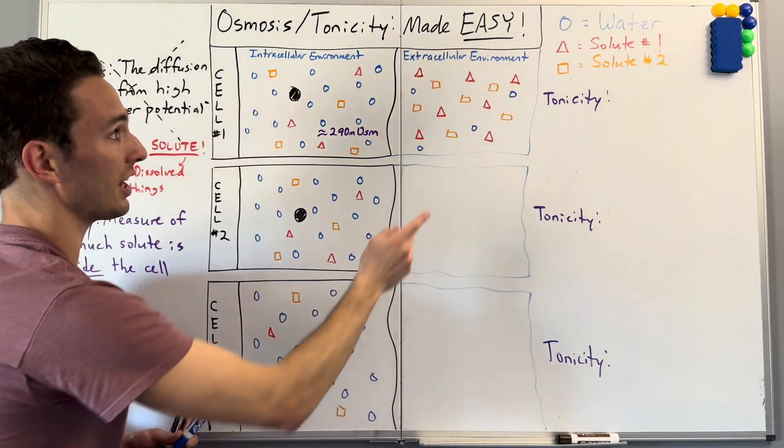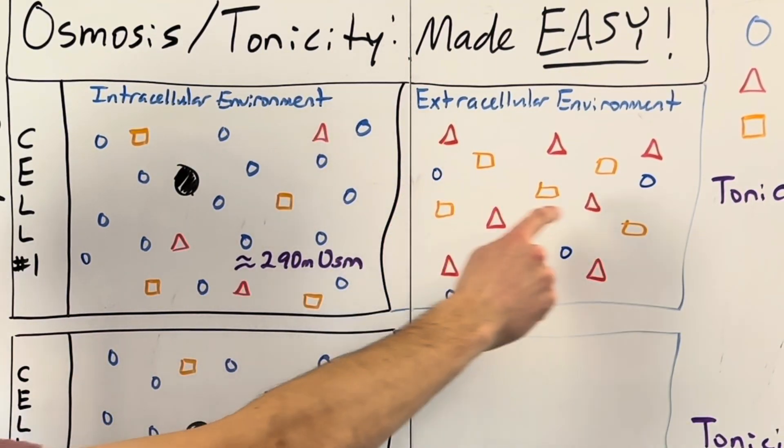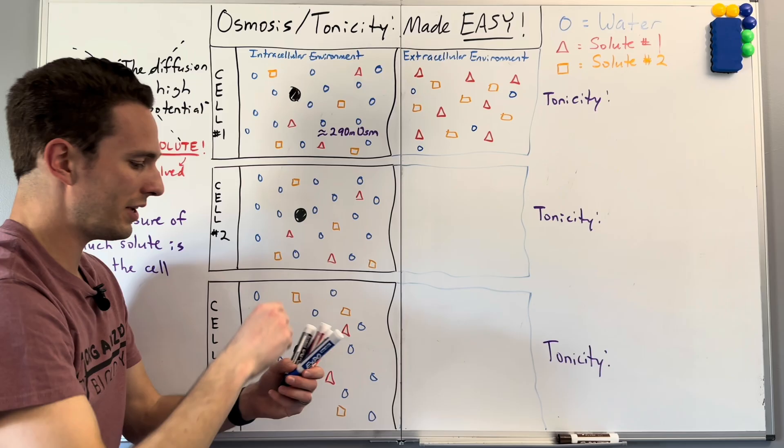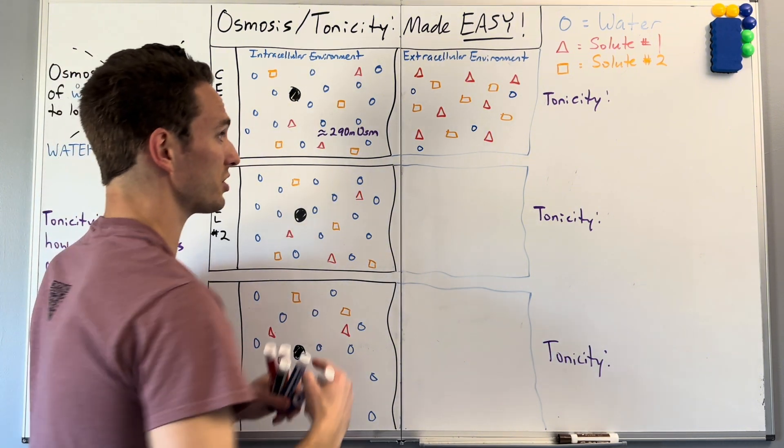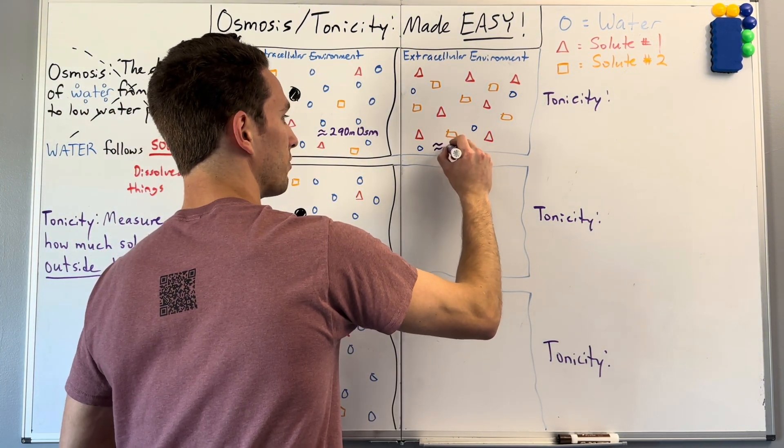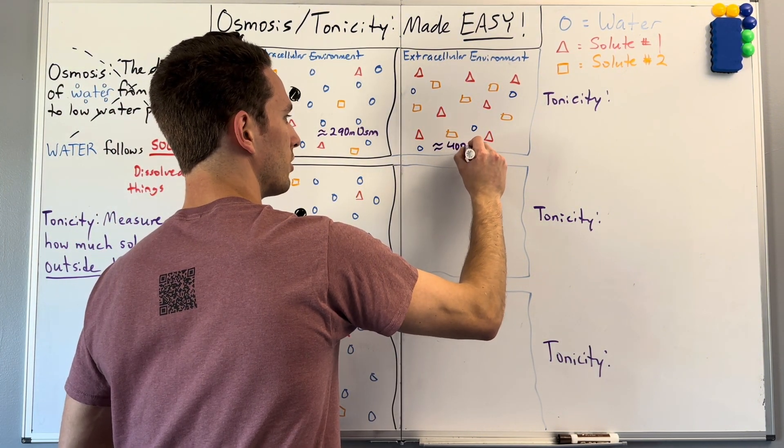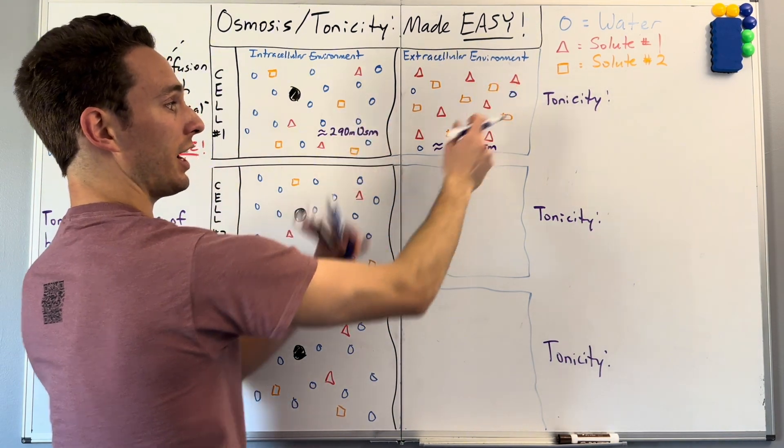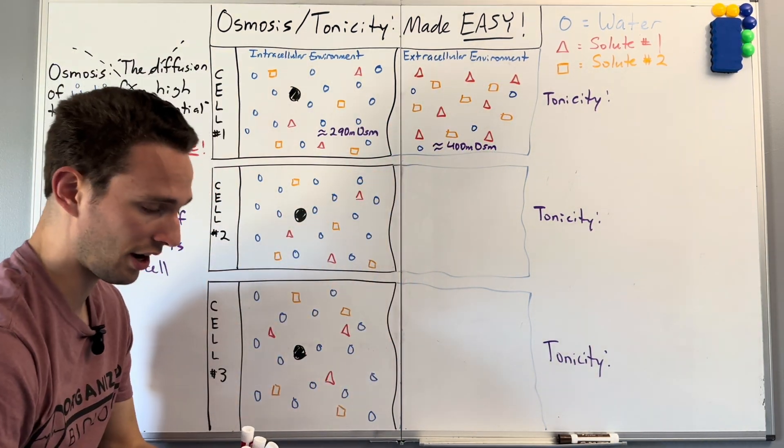Okay, so in this case, you see a lot more solute and very little water. So in this case, the osmolarity of the outside environment, we'll say is somewhere like 400 milliosmoles. So the more solute in a small packed area, the higher the milliosmolarity.